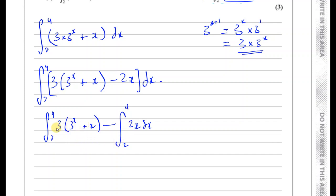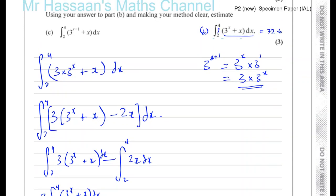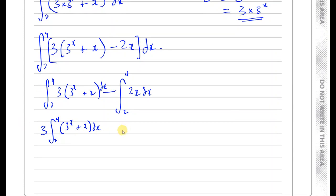So minus 2x with respect to x between 2 and 4. I know what this is. This is basically 3 times the integral between 2 and 4 of 3 to the power of x plus x with respect to x, which we already found. This part we already know. This is the answer to part B, 72.6, minus the integral between the limits of 4 and 2 of 2x with respect to x.